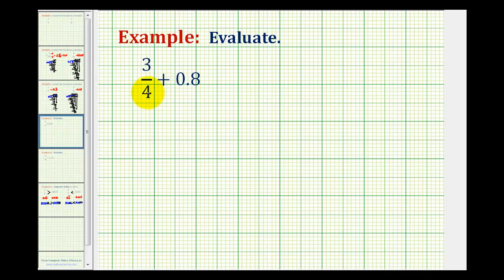To determine the sum involving a fraction and a decimal, we either need to convert this fraction to a decimal and then add the decimals, or convert the decimal to a fraction and then add the fractions. I'll actually show both methods in this video.